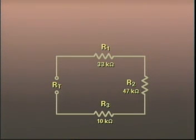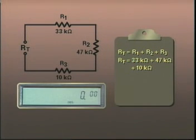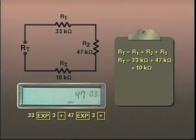Once again, the formula for total resistance is R sub t equals R1 plus R2 plus R3. Substituting values gives 33 k ohms plus 47 k ohms plus 10 k ohms. Keying these values into a calculator means remembering to key in the powers of 10 along with the numbers. Displayed as a series of keystrokes, we would enter 33 exponent 3 plus 47 exponent 3 plus 10 exponent 3, which equals a total resistance of 90 k ohms.